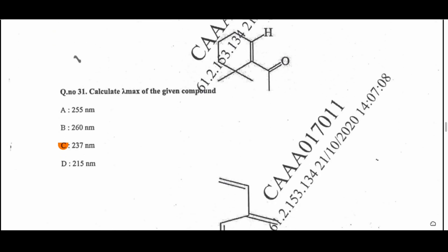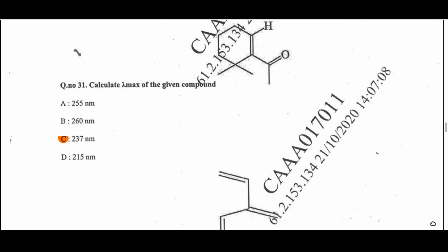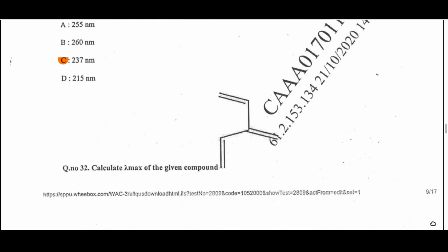Question 31: Calculate the lambda max of the given enone compound — after calculation, lambda max is 237 nanometers, option C. Question 32: Calculate the lambda max of the given compound. It is a cross-conjugation example with a vinyl substituent and is a diene with only one substituent. After calculation, the answer is 220 nanometers.